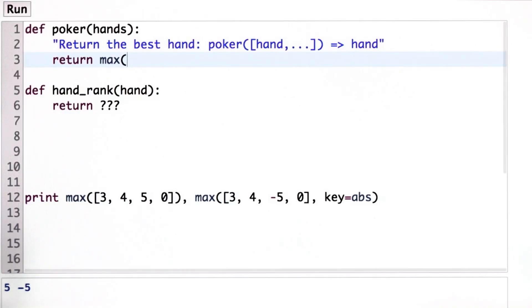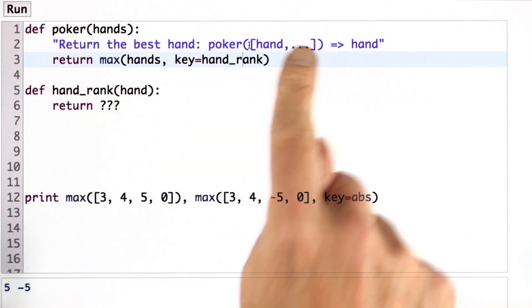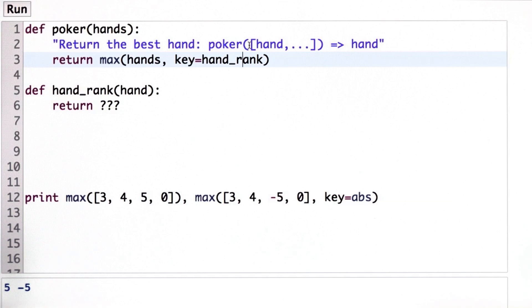And the answer is simple. We take the maximum out of all the hands with the key equal to the hand rank. I like this definition because it's so simple. The whole body is just one line and also because it corresponds so closely to the problem specification.